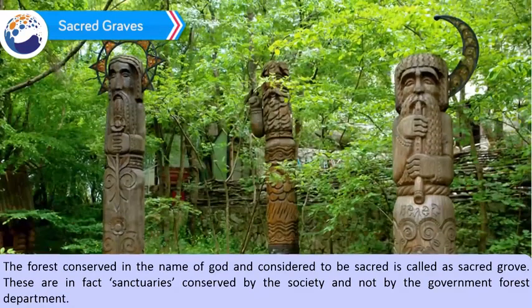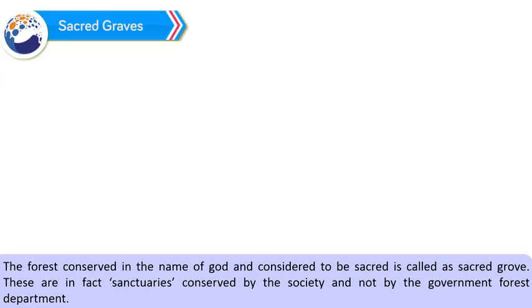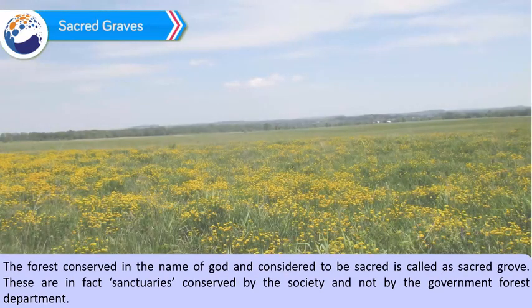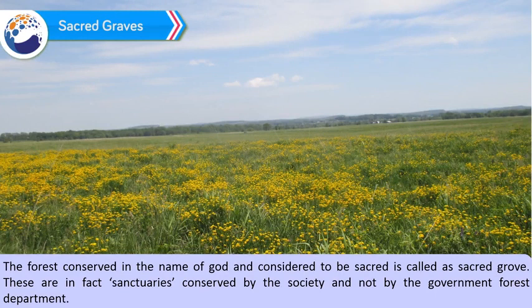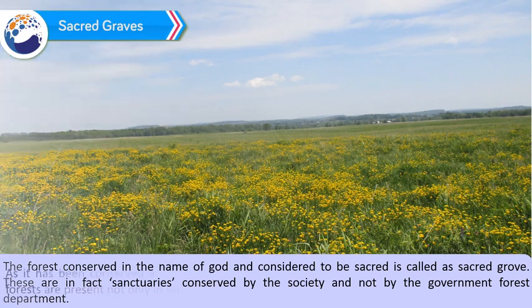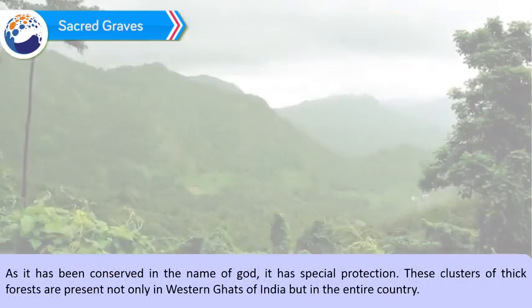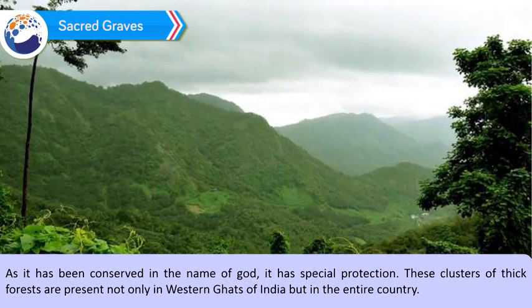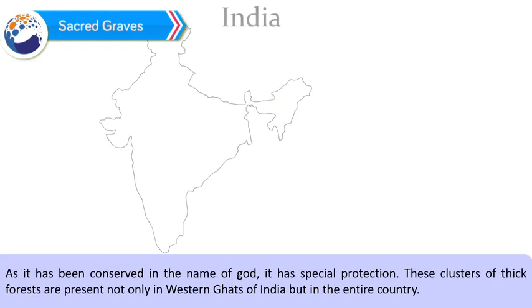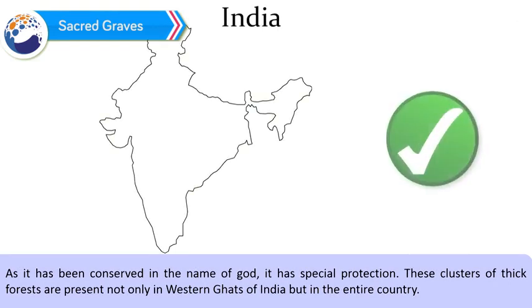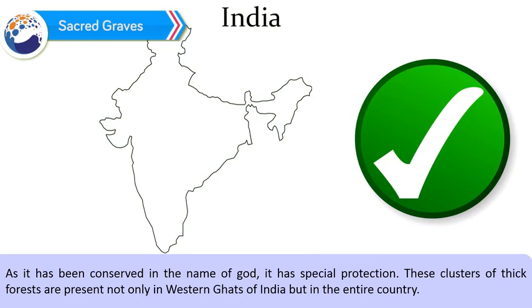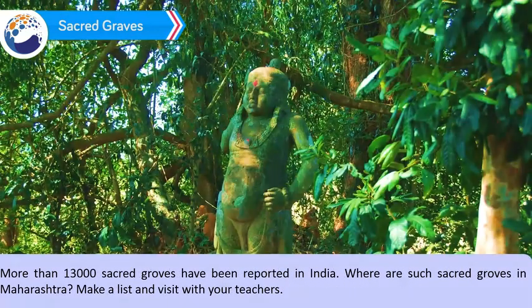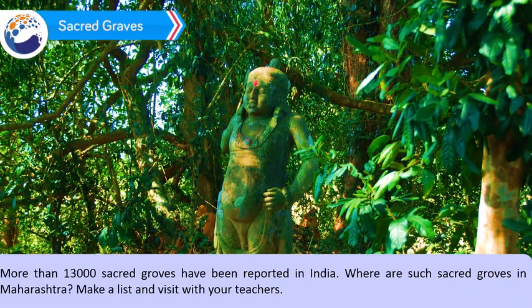Sacred Groves: The forest conserved in the name of God and considered to be sacred is called a Sacred Grove. These are in fact sanctuaries conserved by society and not by the government forest department. As it has been conserved in the name of God, it has special protection. These clusters of thick forests are present not only in the Western Ghats of India, but in the entire country. More than 13,000 sacred groves have been reported in India.